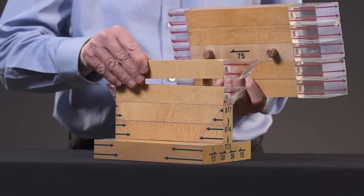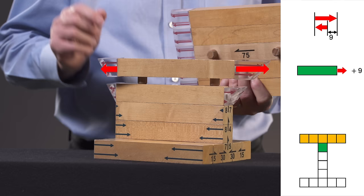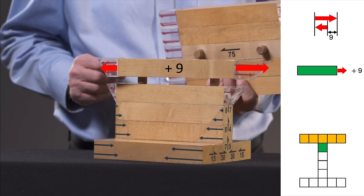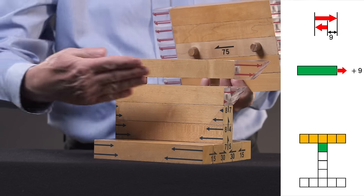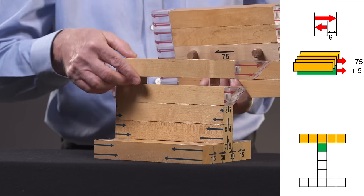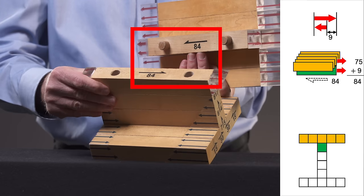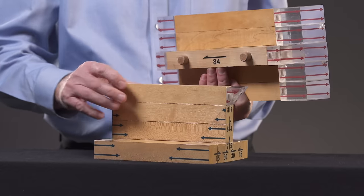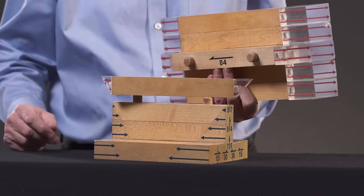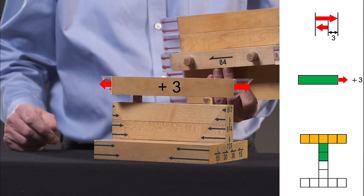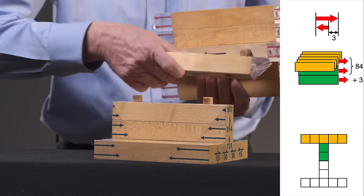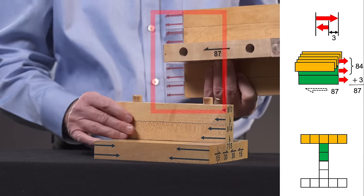A fiber closer to the neutral axis of the beam experiences bending stresses that are smaller. The difference between the forces on the two ends of this fiber is only nine force units. Adding nine to seventy-five gives a total shear of eighty-four units. The difference in the end forces for the fiber just above the neutral axis is only three units. Adding that to eighty-four gives a total of eighty-seven units.